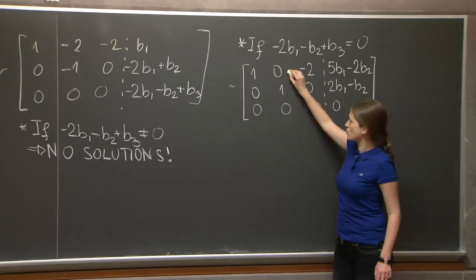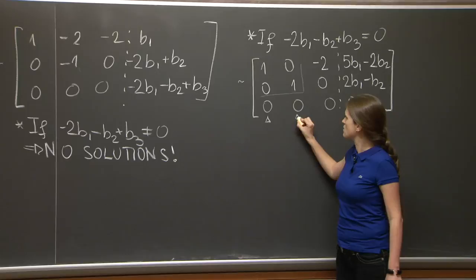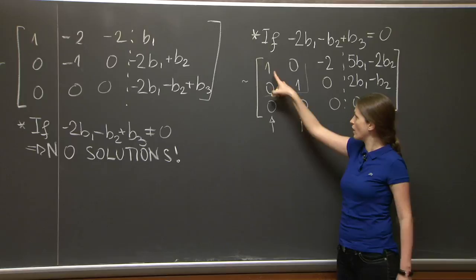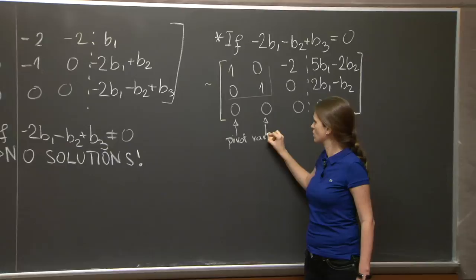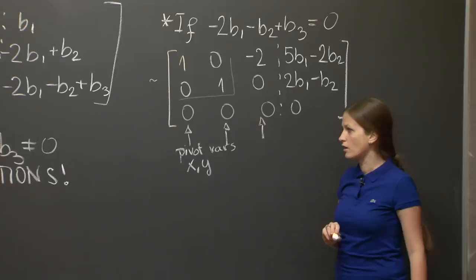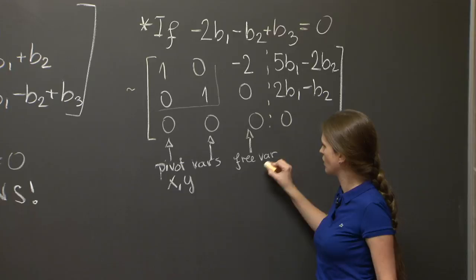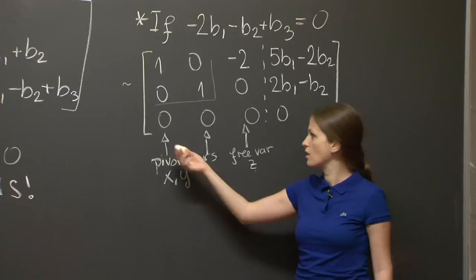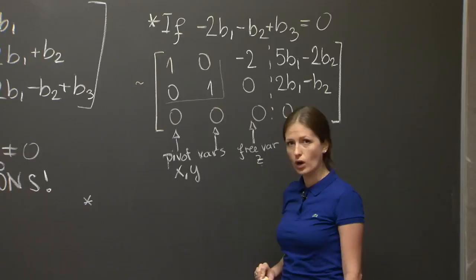The reason why we did this was to get the identity matrix here. And now let's solve this. These two columns, corresponding to variables x and y, have pivots in them. So these are the pivot variables. This column here has no pivot in it, so it's a free variable.